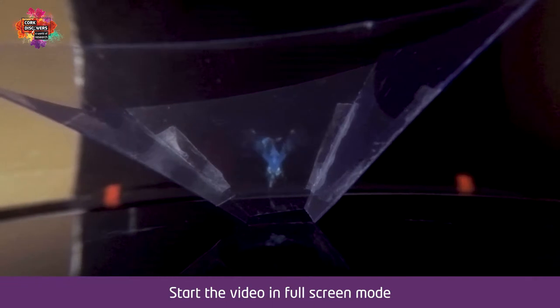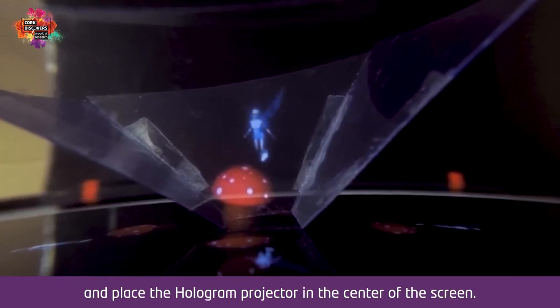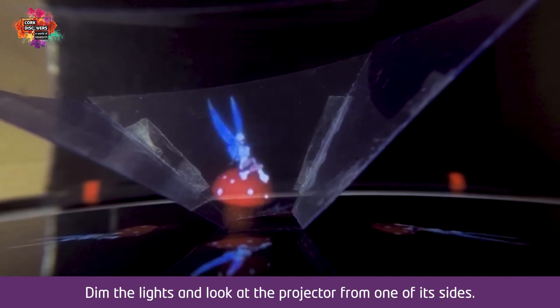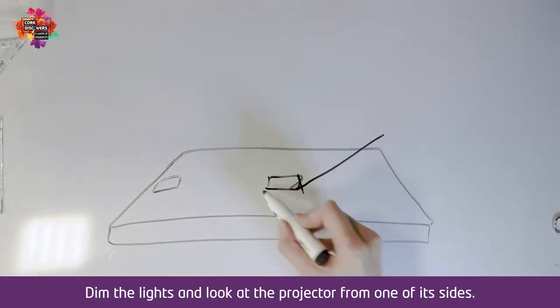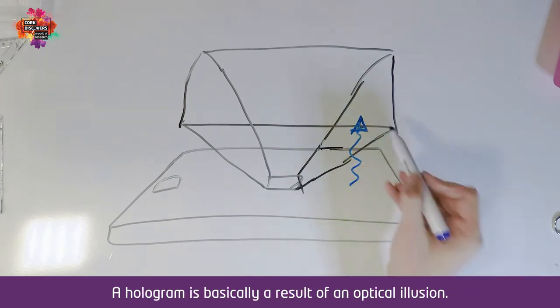Start the video in full screen mode and place the hologram projector at the center of the screen. Dim the lights and look at the projector from one of its sides. A hologram is basically a result of an optical illusion.